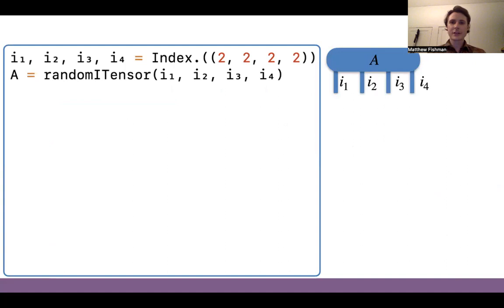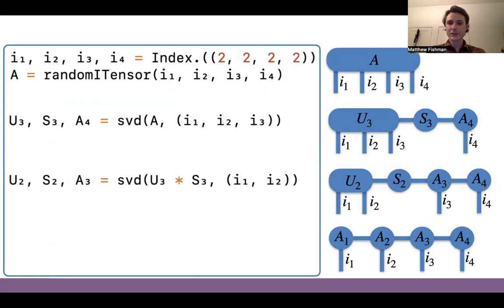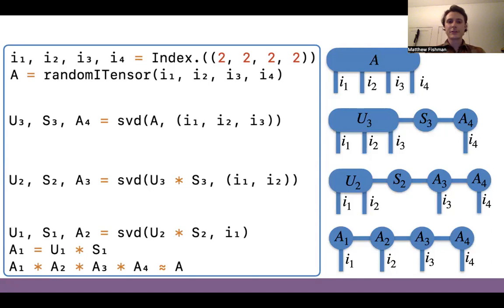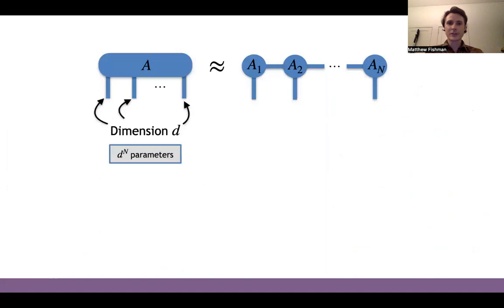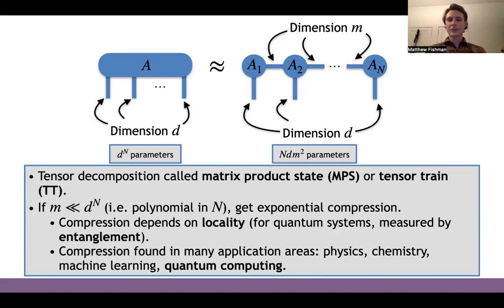Let's look at an example of a simple tensor network. Say we have an order-four tensor. We can first SVD it between the first three indices and the last index, then between the first two indices and the rest, and then the first index. After this series of SVDs, we've turned an order-four tensor into a product of four order-three tensors. This is an example of a simple tensor network. We started with a tensor of d^n parameters and ended with a tensor network of n × d × m² parameters, where m is the internal bond dimension. This tensor network is referred to as a matrix product state (MPS) or tensor train.